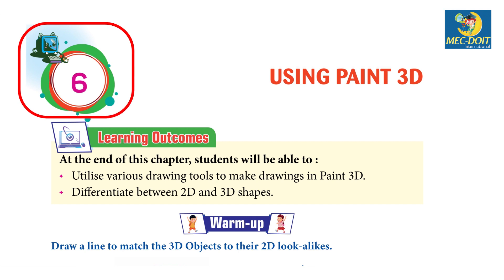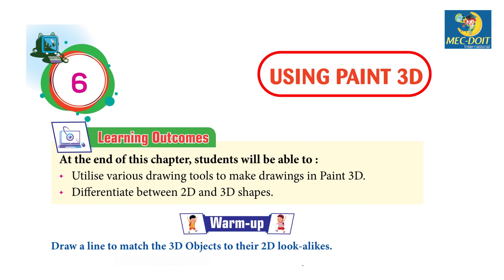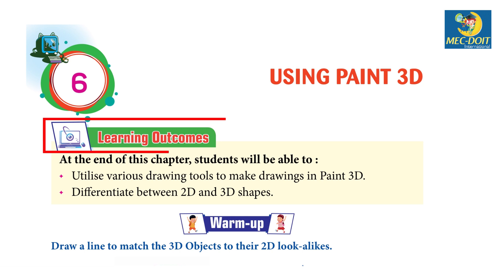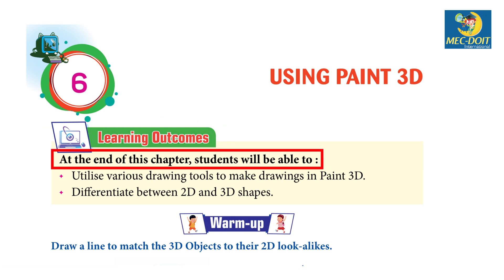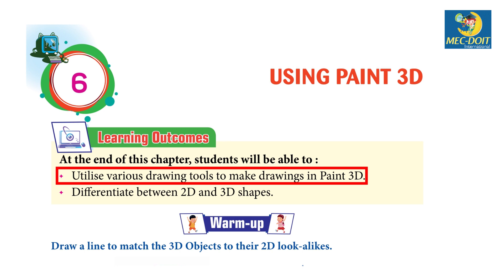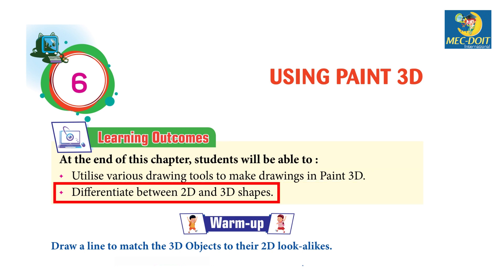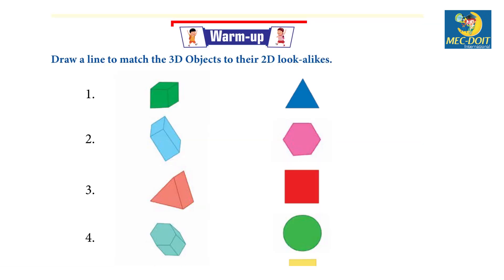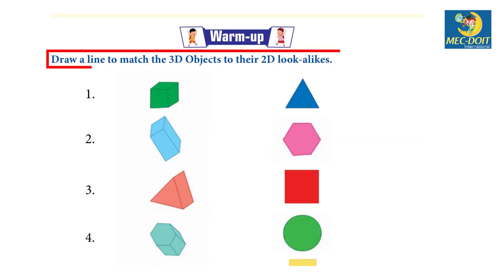Chapter 6: Using Paint 3D. Learning outcomes — at the end of this chapter, students will be able to utilize various drawing tools to make drawings in Paint 3D, and differentiate between 2D and 3D shapes.